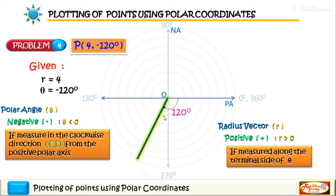So we have the first unit here and we have the second unit and the third unit and we have the last unit. So that is the value of R which is 4. And so this is the given point P with coordinates 4 and negative 120.